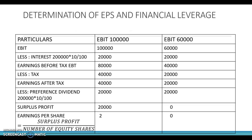Now let us see the situation when EBIT is decreasing. When EBIT decreases by 40%: Rs.1,00,000 − Rs.40,000 = Rs.60,000. Less interest Rs.20,000; earnings before tax = Rs.40,000. Less tax at 50% = Rs.20,000; earnings after tax = Rs.20,000. Less preference dividend (fixed) Rs.20,000; surplus profit = Rs.0. There is no surplus profit available for equity shareholders, so EPS is zero.